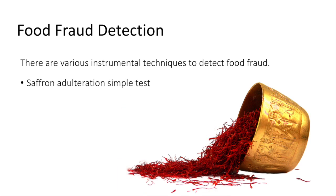Food fraud detection in saffron using a simple method: take a transparent glass of water and add a teaspoon of saffron. Adulterated saffron will settle to the bottom and can be easily identified — for example, maize corn filaments and other commodities that are colored to appear as saffron will sink and be visible.